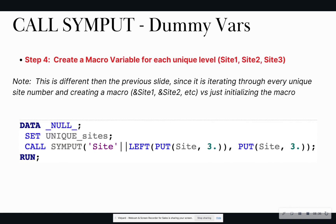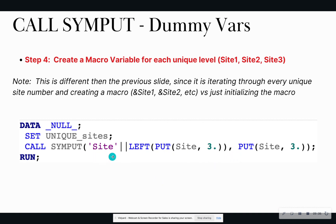The next step is creating a macro variable for every unique level. I'm creating a macro variable called site one that will hold the site one value, a macro called site two, site three, site four, and so forth. This step is not just initializing the macros to zero — it's actually creating those individual columns that I need in my final data set: a column called site one, site two, site three, site four.